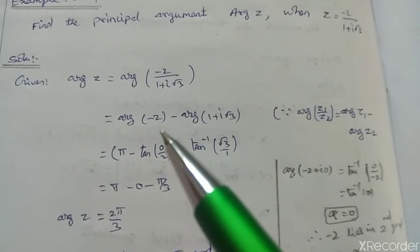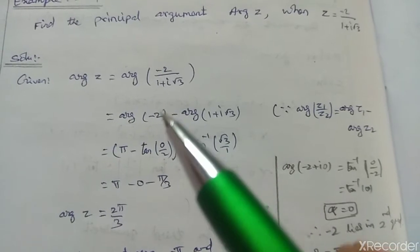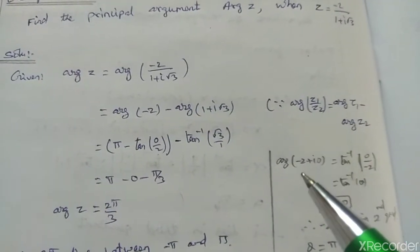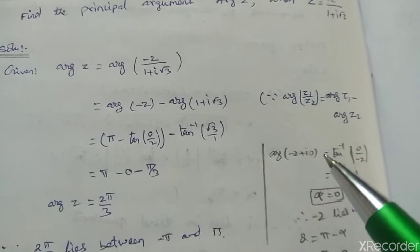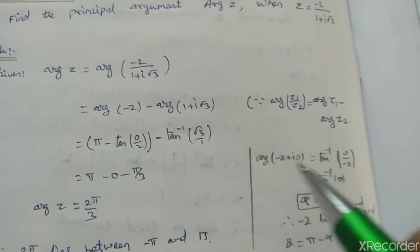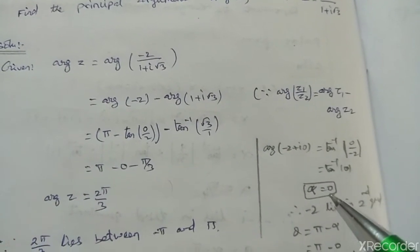For argument of a plus ib formula when imaginary part is 0: argument of minus 2 plus i0 equals tan inverse of b by a equals 0 by minus 2 equals 0, so alpha equals 0.